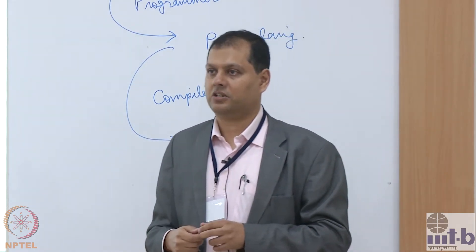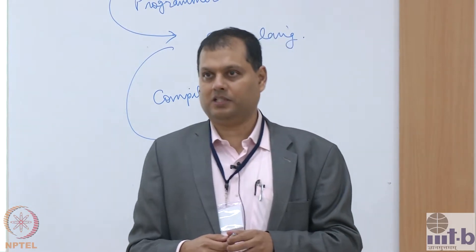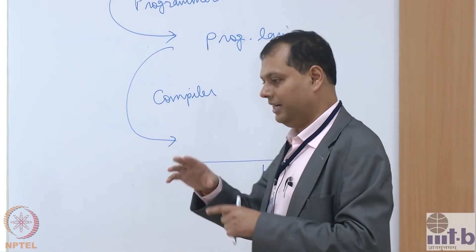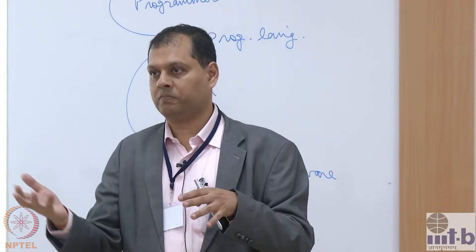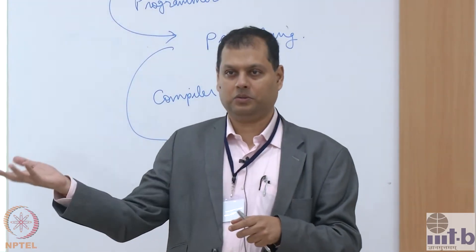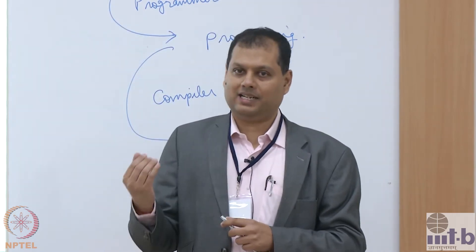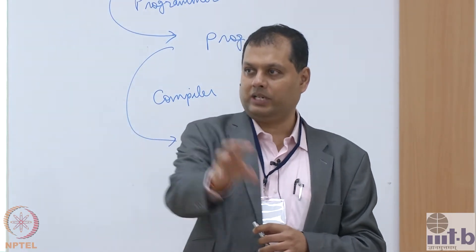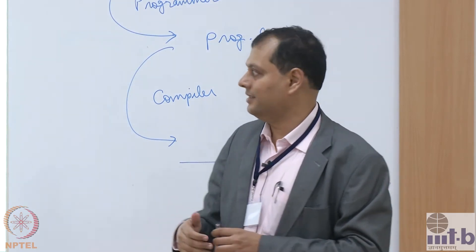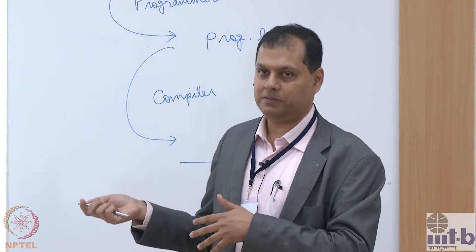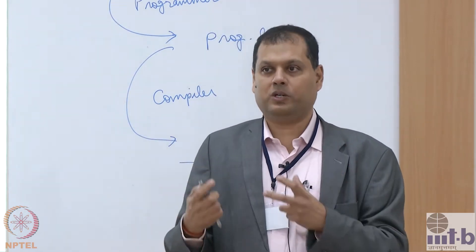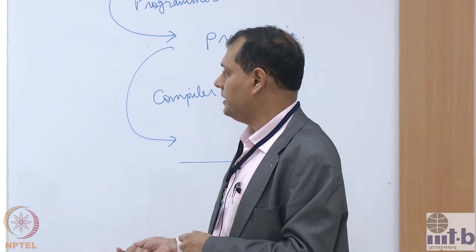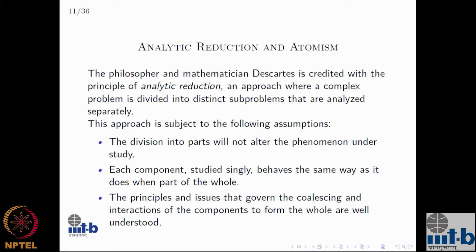You may have studied electronics at some point. There are transistors and thyristors, and they have certain characteristics. You can see how a transistor behaves on an oscilloscope — give it certain input voltage, see the output patterns. This works because the implicit assumption is that a transistor behaves exactly the same way by itself as it does when it is part of a VLSI chip. A transistor circuit fulfills the analytic reduction property, and the principles governing the coalescing of the system are also well understood.